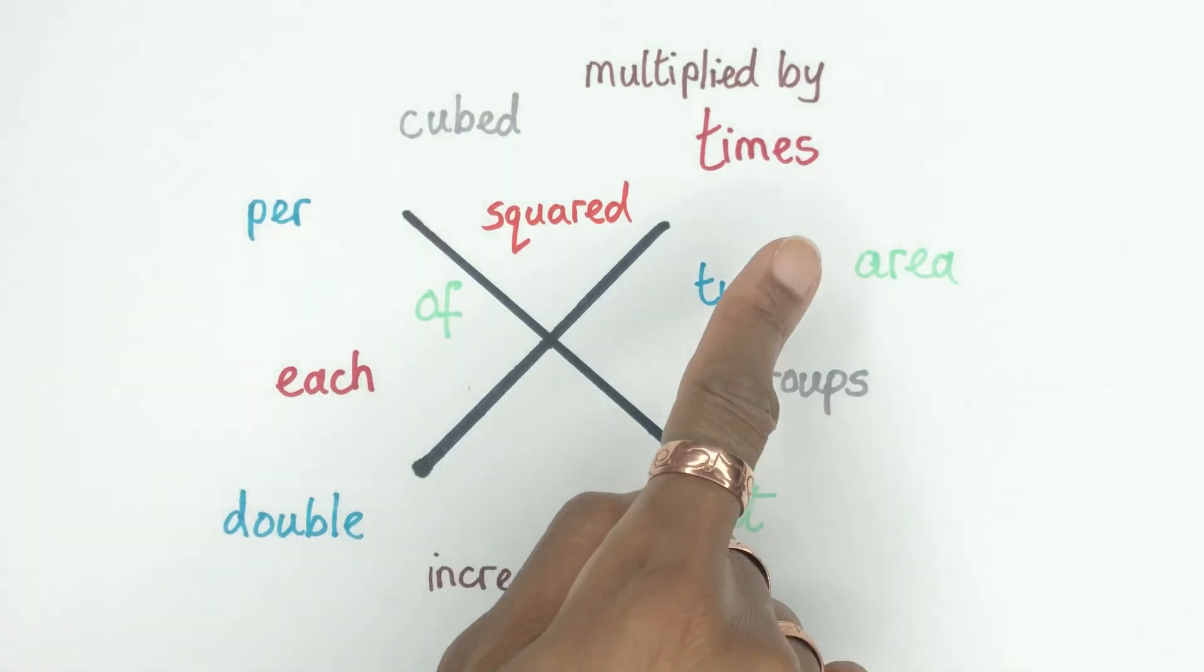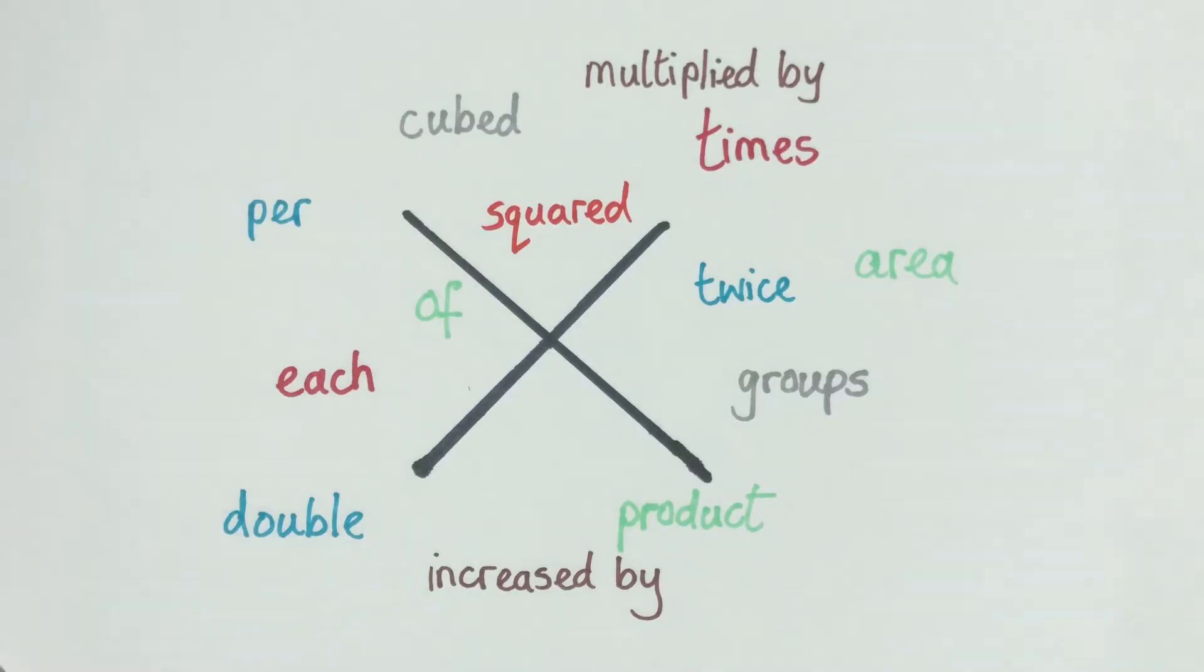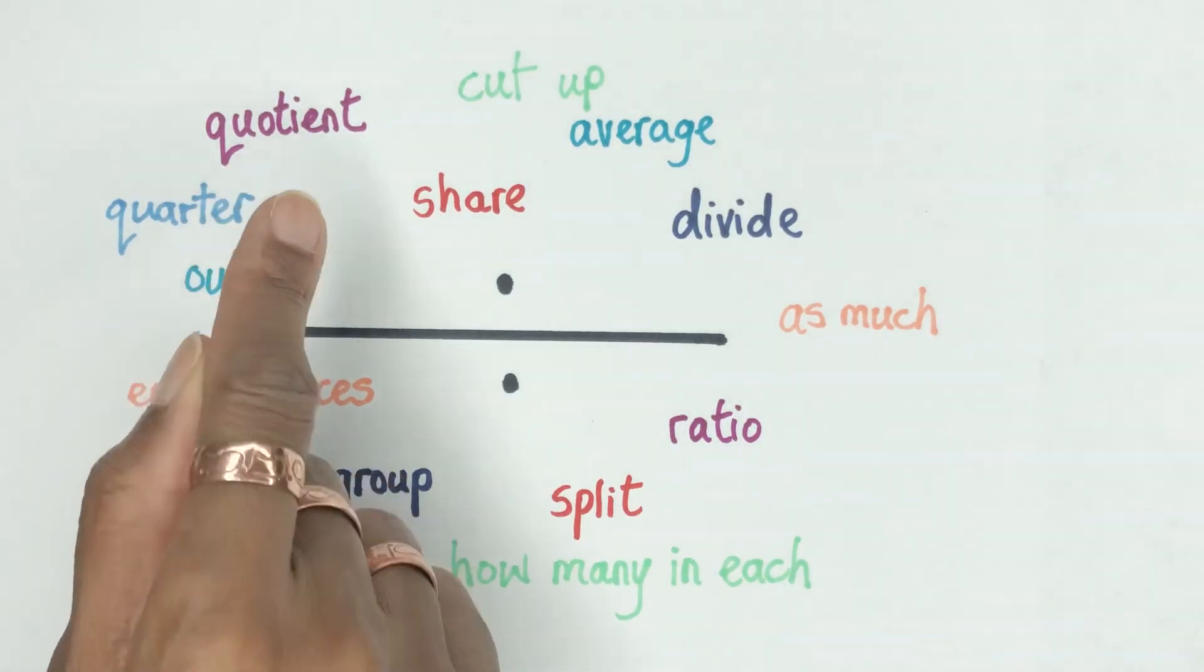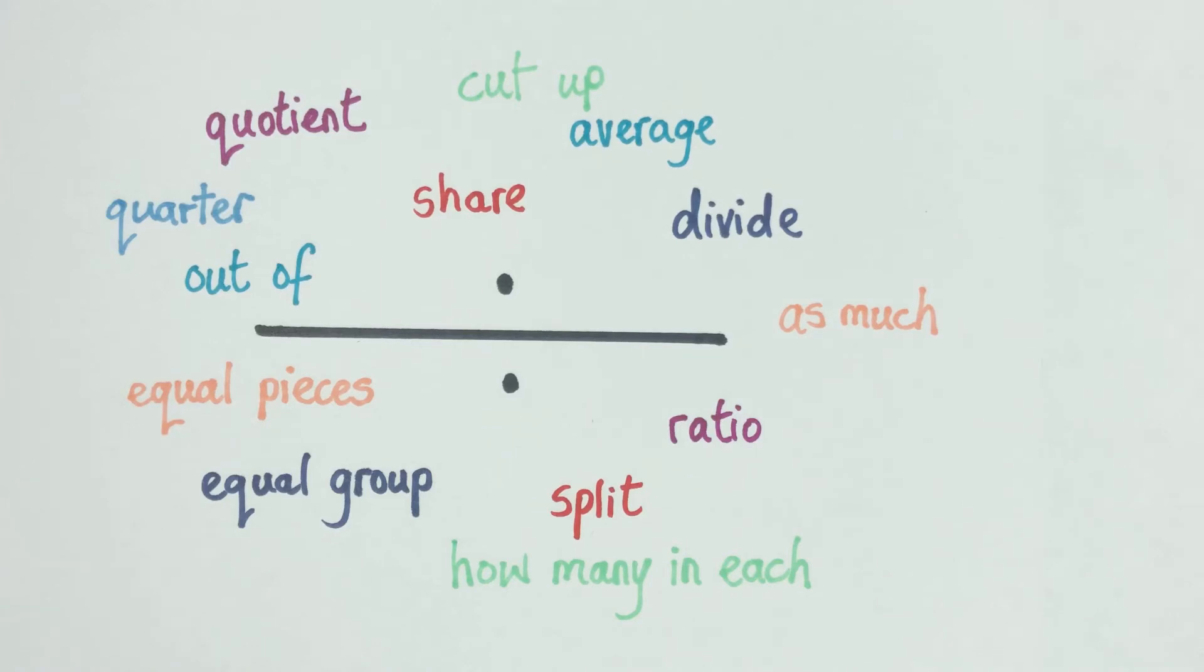Now division is the last one of the four operations. You can see there's quite a few words here as well. Most common ones: share is a good one, how many out of, you know so and so has a toy and they're sharing it between them, so you know that you're dividing. Quotient, that's one that they use pretty often in middle school to differentiate from multiplication which is product, so they use quotient for division. Split, you know you're sharing, you're dividing, you're breaking it down. Obviously divide is the most common one. How many in each, depending upon the situation of the actual word problem.